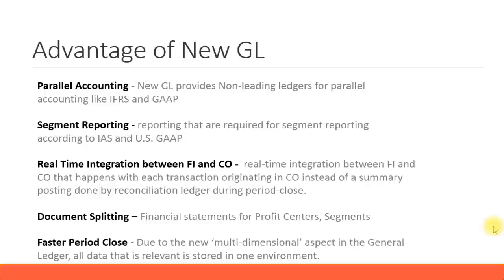What are the advantages of using NewGL? For one, Parallel Accounting. NewGL provides non-leading ledgers for parallel accounting like IFRS and GAAP. These are some of the international accounting standards. Your normal ledger is called your leading ledger, and if you want to have parallel ledgers — for specific accounting purposes based on international or country requirements — you can have a parallel accounting option. While posting to the main ledger, you can have another ledger where the system also posts simultaneously. That's the advantage of parallel accounting.